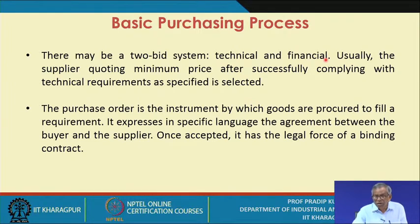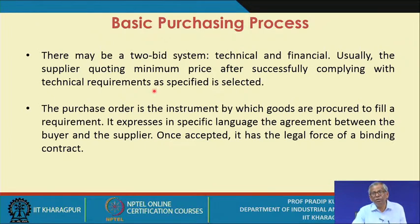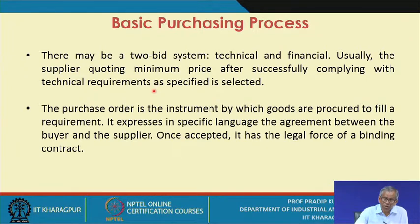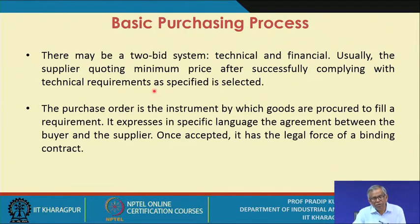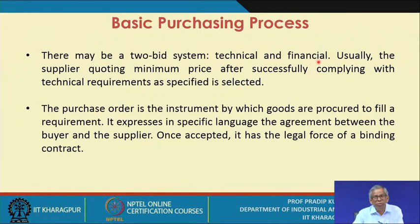These two bids are known as the technical bid followed by the financial bid. You invite quotations from prospective suppliers and ask them to submit both a technical bid and a financial bid. Usually the supplier quoting the minimum price after successfully complying with the technical requirements is selected. First you check to what extent each bidder fulfills the technical requirements for the given order, and only once a bidder passes the technical bid is the financial bid checked or verified.